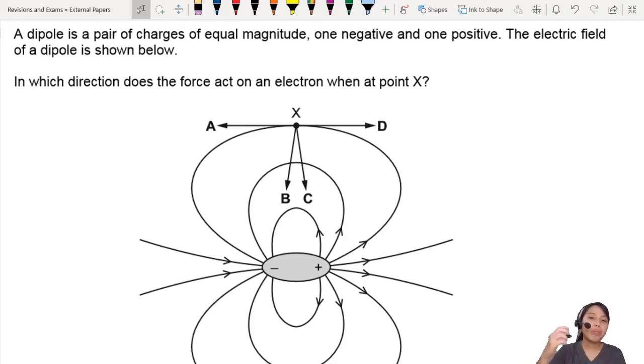Here's a dipole, which means there is a positive and a negative end to this particle or molecule, whatever it is. The electric field is shown below. In which direction is the force acting on an electron?